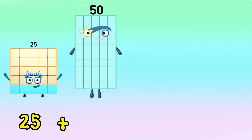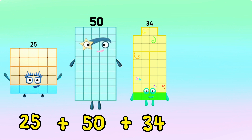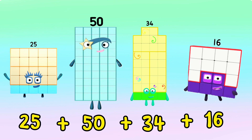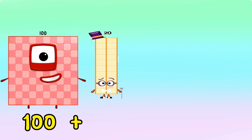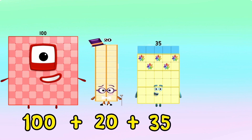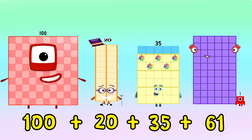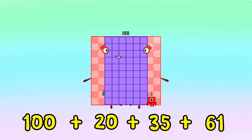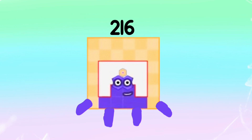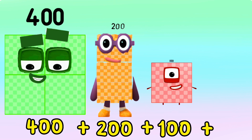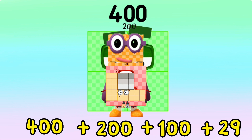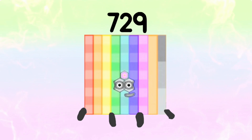25 plus 50 plus 34 plus 16 is equals to 125. 100 plus 20 plus 35 plus 61 is equals to 216. 400 plus 200 plus 100 plus 29 is equals to 729.